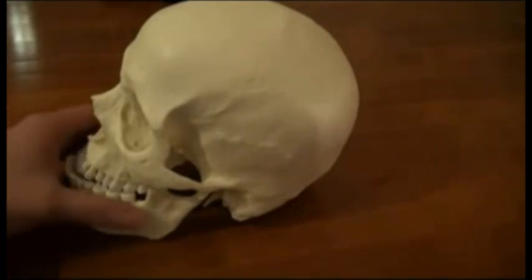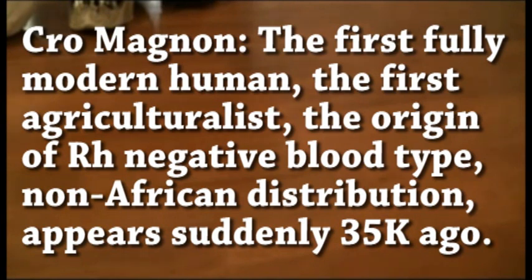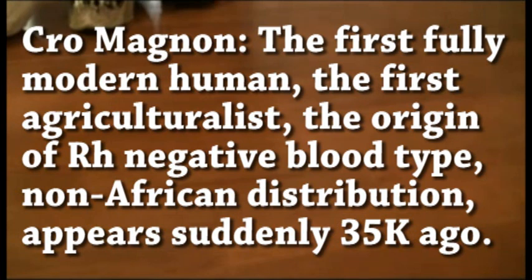Next we're going to move to a Cro-Magnon skull. The Cro-Magnons were classically described as early modern humans and now they're used to denote early modern humans in Europe. The first radiocarbon dating is about 35,000 years ago. This specimen is estimated to be between 10,000 and 30,000 years ago and was recovered from a gravel pit. The age has been determined from the associated animal findings.